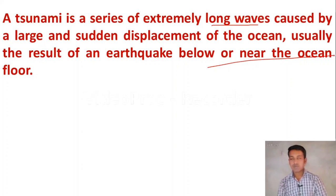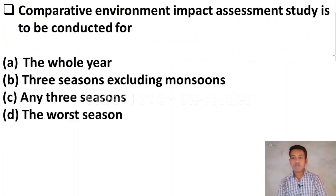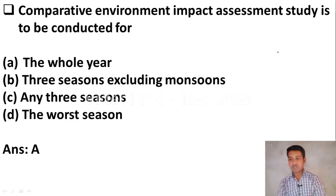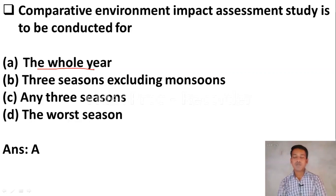Next question: comparative environment impact assessment studies are to be conducted for. Option A, the whole year. Option B, three seasons excluding monsoons. Option C, any three seasons. Option D, the worst season. The right answer is Option A — the whole year. Comparative environment impact assessment study is to be conducted for the whole year.